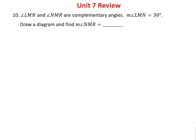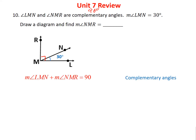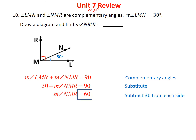Problem 10 says angles LMN and NMR are complementary, and one angle is 30 degrees. Complementary means the two angles add up to 90 degrees. Draw a diagram of two angles forming a right angle, with one measuring 30 degrees. Since 30 + ? = 90, the other angle is 60 degrees.